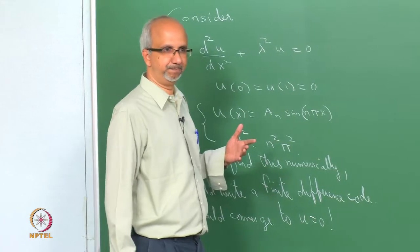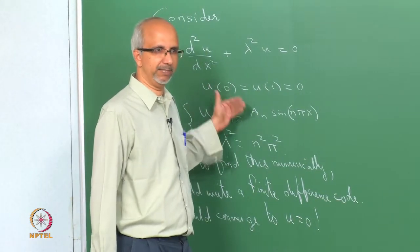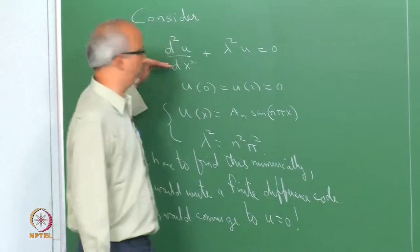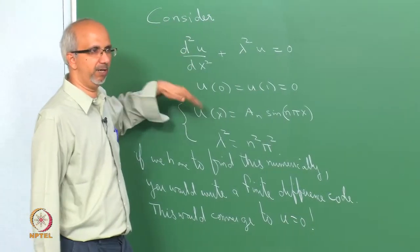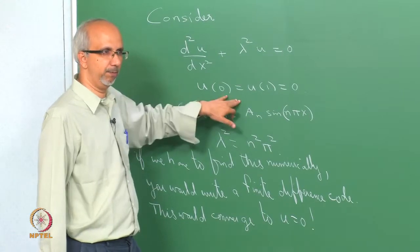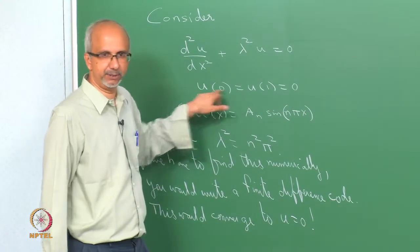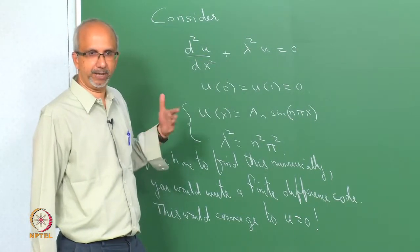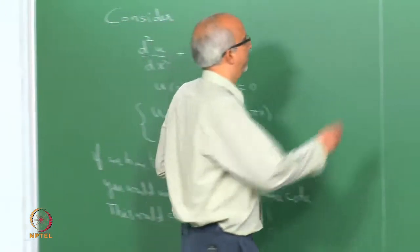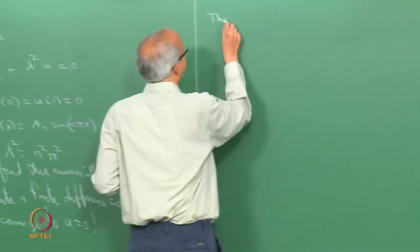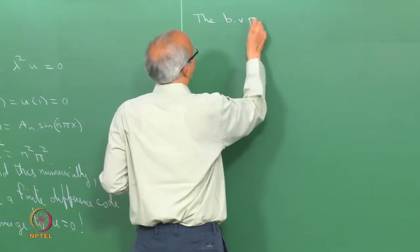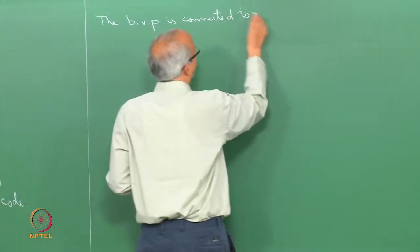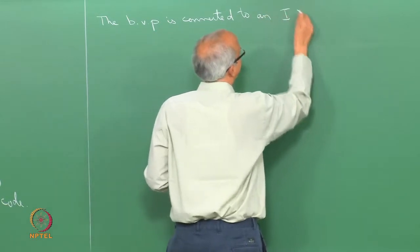Another alternative is to use the shooting method. The idea is to convert the boundary value problem — where conditions are specified at two endpoints — into an initial value problem, and then solve.